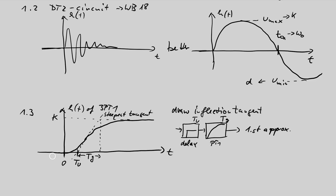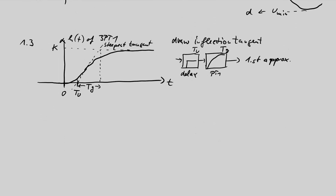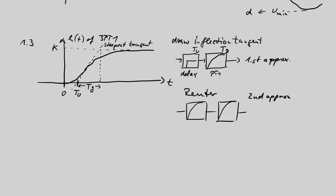So we identify our 3PT1 process with a simplified model containing one PT1 and a delay. In your report you should compare the step response of this simplified curve with the original step response of the 3PT1 curve. That is the first model. The second approximation uses the Reuter method — the Reuter module in my identification program just needs Tu and Tg as inputs and then calculates T1, T2, and sometimes a delay time.